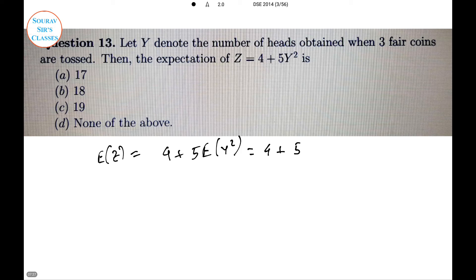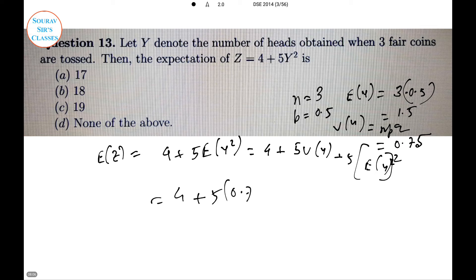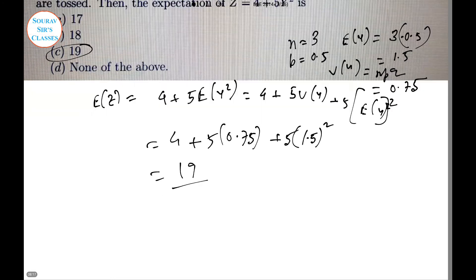Y follows a binomial distribution with parameters n equals 3 and probability p equals 0.5. Expectation of Y is mean, which is 3 times 0.5, that is 1.5. Variance is npq, which is 0.75. We can put the value: variance of Y equals E of Y squared minus expectation of Y squared. So we can write 4 plus 5 times 0.75 plus 5 times 1.5 squared.